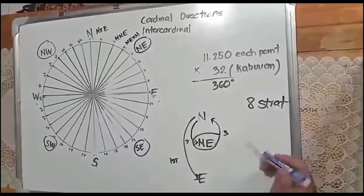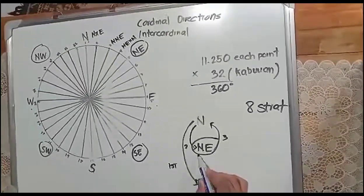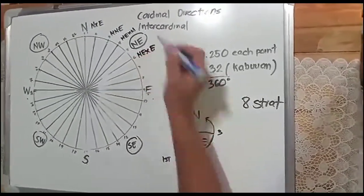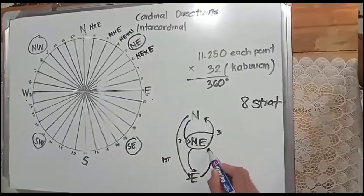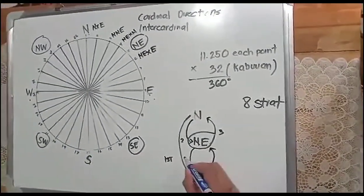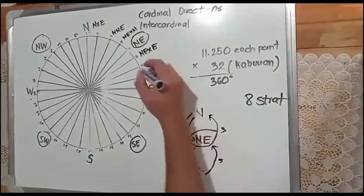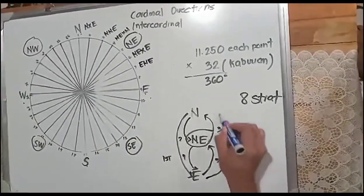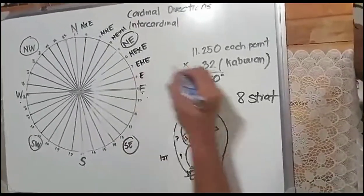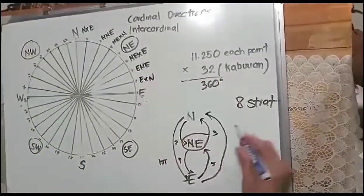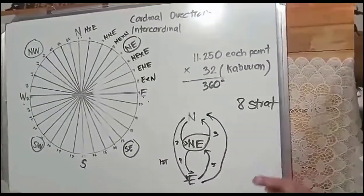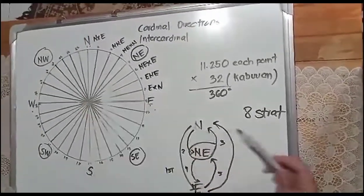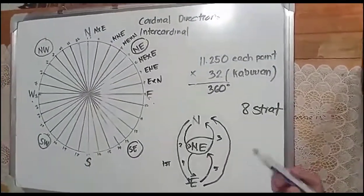The third is northeast by north. Next is NE, fill in the middle for the fifth vector, the intercardinal direction. Next vector, from northeast going down: northeast by east. Then going up: east northeast. The last one, from east going up: east by north.